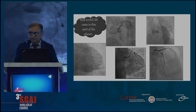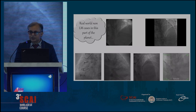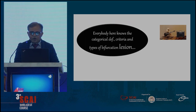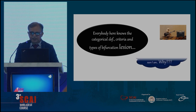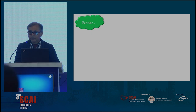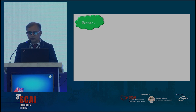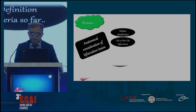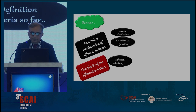These are real-world left main bifurcation cases, and these are real-world non-left main bifurcation cases. Everybody here knows the categorical difference, definitions, criteria, and types of bifurcation lesions. From the classification alone, you can tell that all bifurcations are not equal — this is in terms of anatomical consideration of the bifurcation lesions by Medina classification, or left main versus non-left main bifurcation complexity, as described.